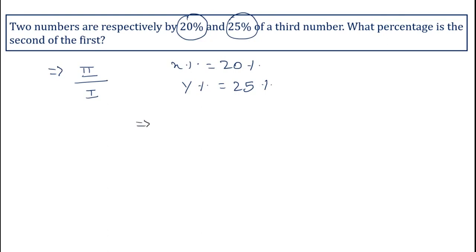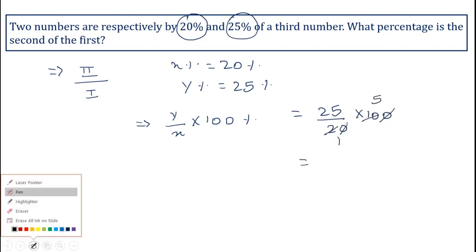Now y is 25 upon x is 20 into 100. The zeros cancel, 20 becomes 5, so 5 into 25 is 125.